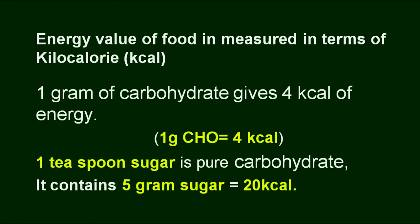One gram of carbohydrate gives 4 calories. It is very important not only to get energy to maintain health, but also to protect yourself from various kinds of diseases. For example, 1 teaspoon of sugar is pure carbohydrate, and 1 teaspoon of sugar contains 5 grams of sugar, giving you 20 calories. So you can easily calculate how much carbohydrate and how many calories you are taking in by eating just 1 teaspoon of sugar.